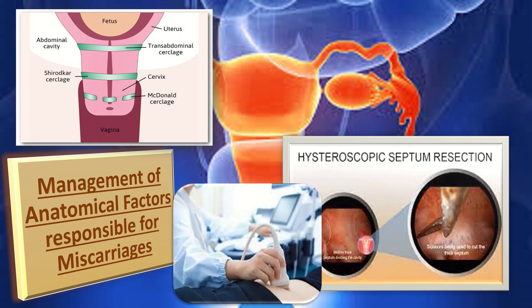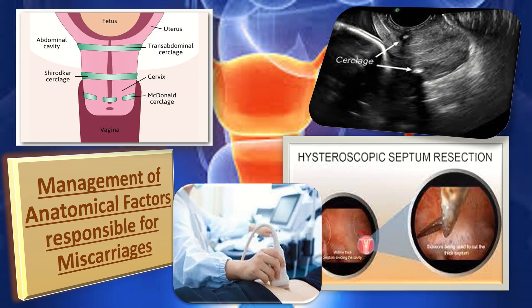Regarding serial cervical sonographic surveillance: women with a history of second trimester miscarriage and suspected cervical weakness who have not undergone history-indicated cerclage may be offered serial cervical sonographic surveillance. For ultrasound-indicated cerclage, in a woman with a singleton pregnancy and a history of one second trimester miscarriage attributed to cervical factors, cerclage should be offered if a cervical length of 25 mm or less is detected by transvaginal scan before 24 weeks of gestation.